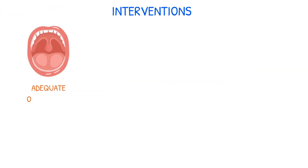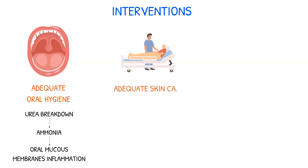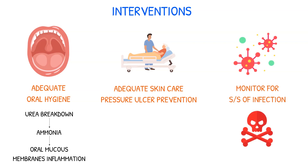Ensure adequate oral hygiene, as bacterial breakdown of urea produces ammonia that can inflame oral mucous membranes. Perform adequate skin care and practice prevention methods for pressure ulcers. Monitor for signs and symptoms of infection, as it is the leading cause of death for patients with acute kidney injury.